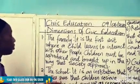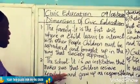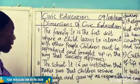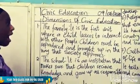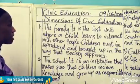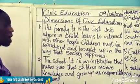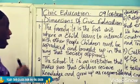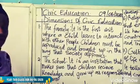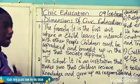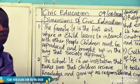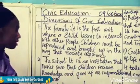After the family, we have the school. The school is an institution that makes sure children receive knowledge and grow up as responsible citizens. At school, children come to learn how to read and write, how to do things, and grow up as responsible citizens.